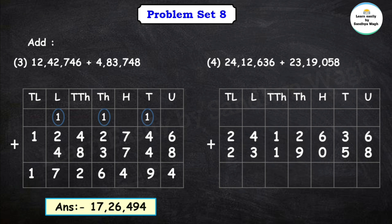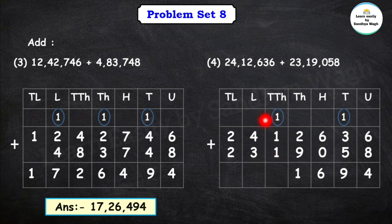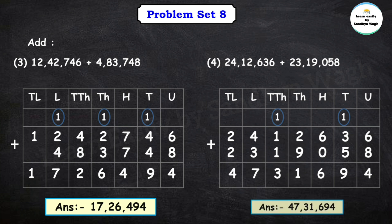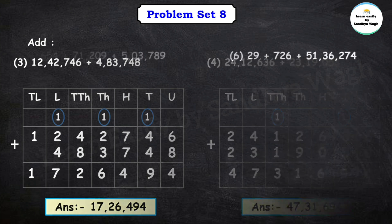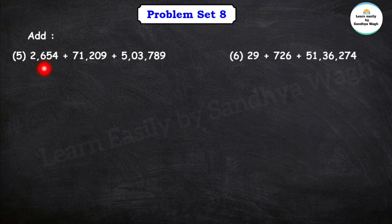Next question: 24,12,636 plus 23,19,058. Let's add. 6 plus 8 is 14, write 4 in units place and carry 1. Then 3 plus 5 is 8, plus carry is 9. 6 plus 0 is 6. 2 plus 9 is 11, write 1 and carry 1. 1 plus 1 is 2, plus the carry is 3. 4 plus 3 is 7, and 2 plus 2 is 4. So our final answer is 47,31,694.